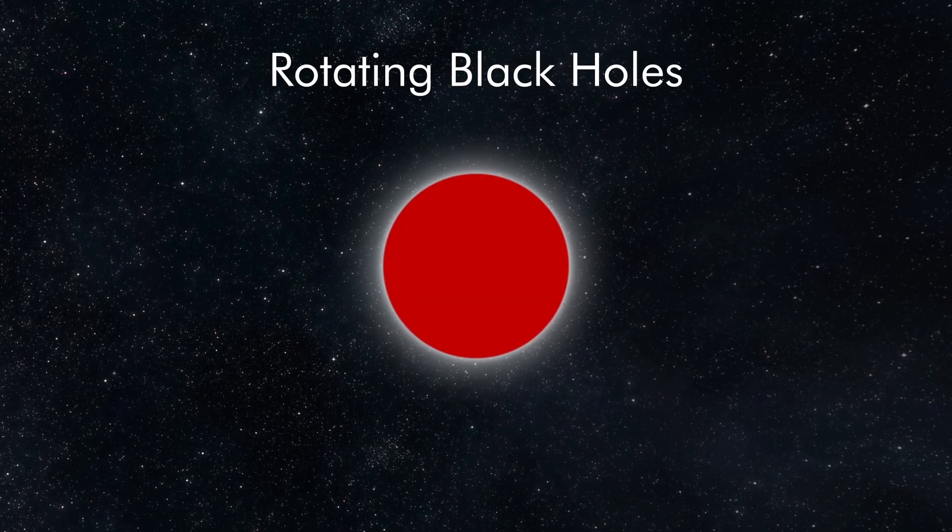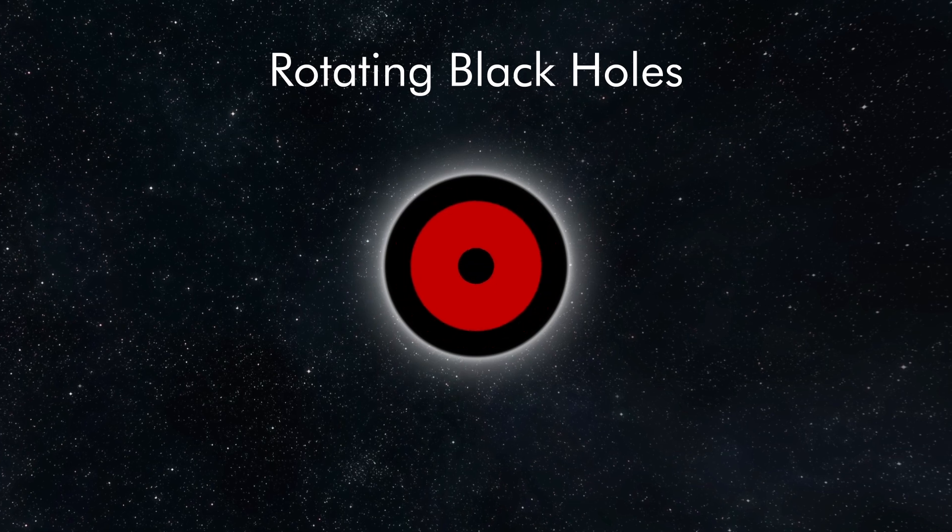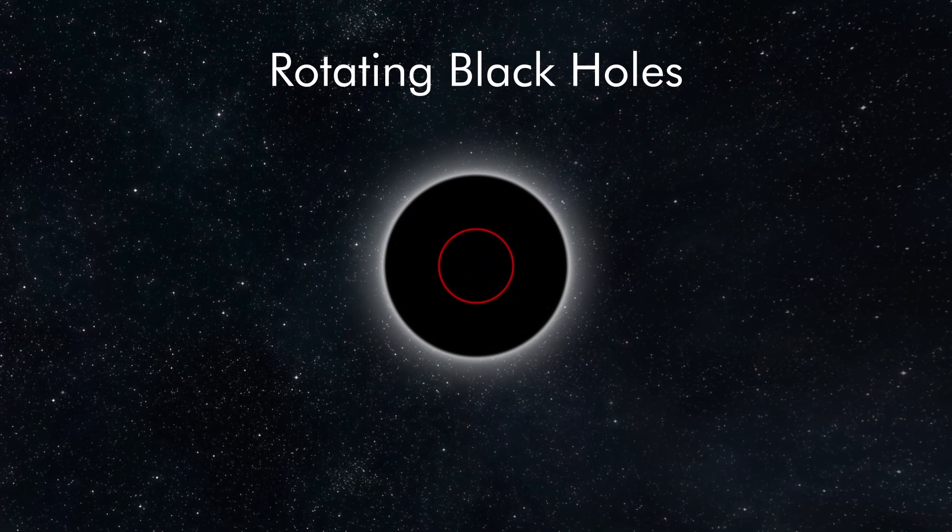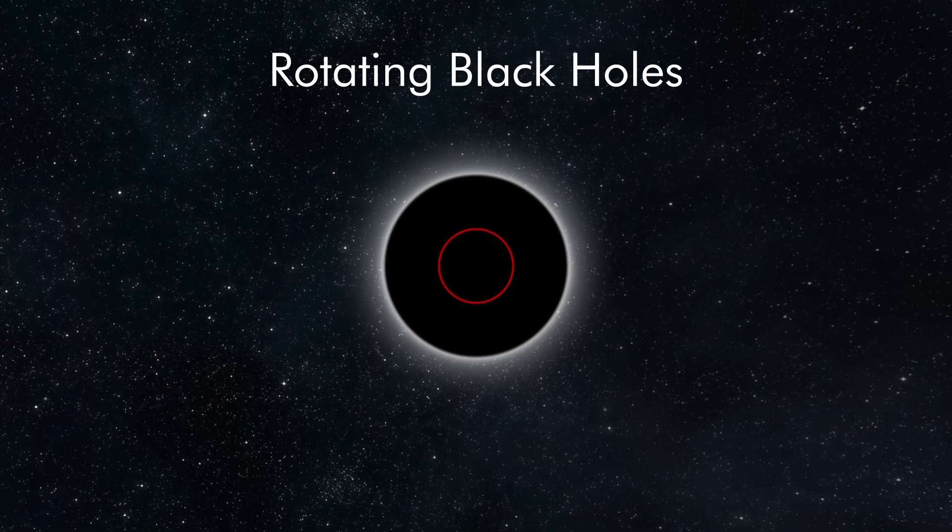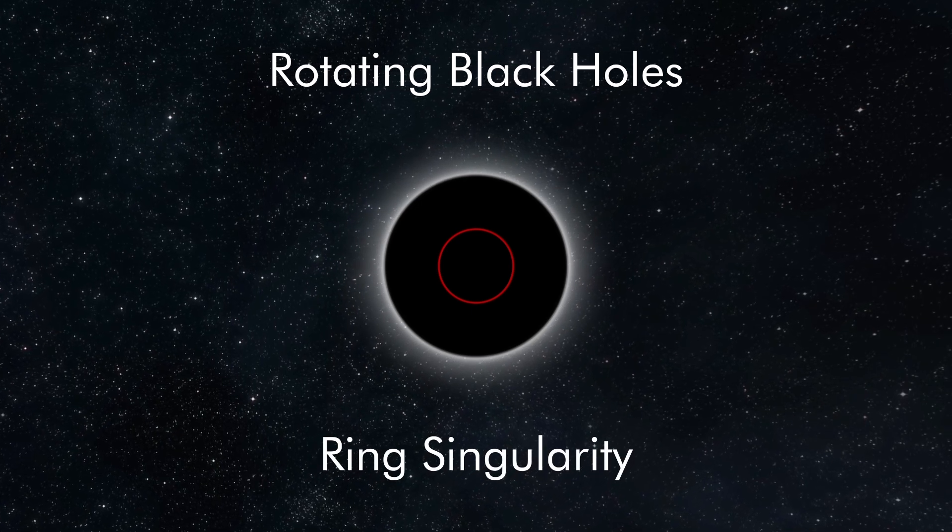Rotating black holes have a different interior. In this case, the mass inside a black hole will continue to collapse, but because of the rotation, it will coalesce into a circle, not a point. This circle has no thickness, and is called a ring singularity.